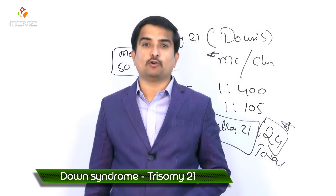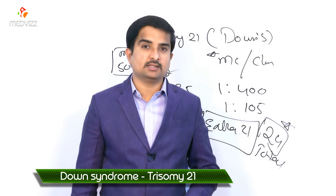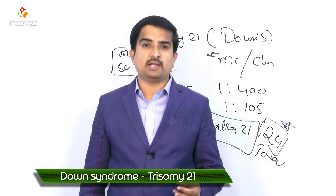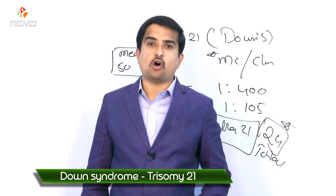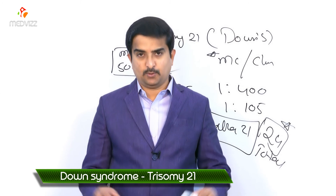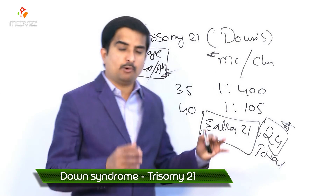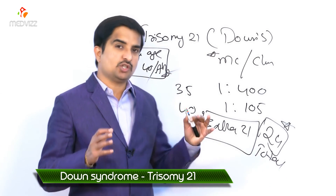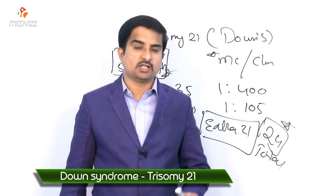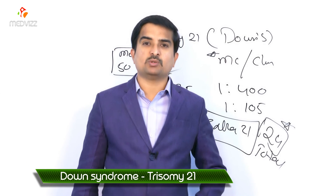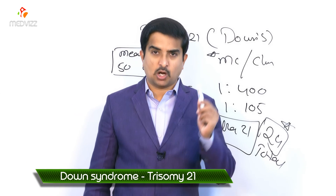All leukemias, including acute lymphoblastic leukemia (ALL) and AML, are also more common in these individuals. These are the key points to know about trisomy 21, or Down syndrome.